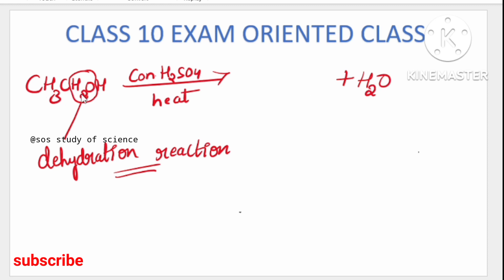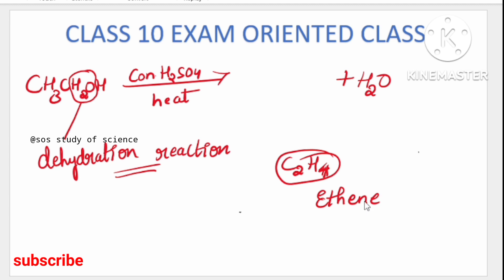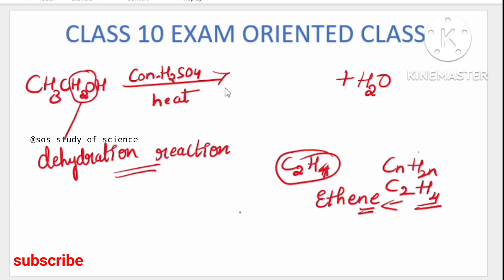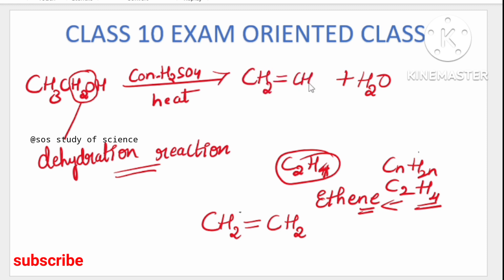After removing water from ethanol, what remains is two carbon atoms and four hydrogen atoms. The compound with 2 carbons and 4 hydrogens is ethene. Using the alkene formula CₙH₂ₙ, when n=2 we get C₂H₄ — that is ethene. The structural formula is CH₂=CH₂, or simply C₂H₄. Both forms are correct.